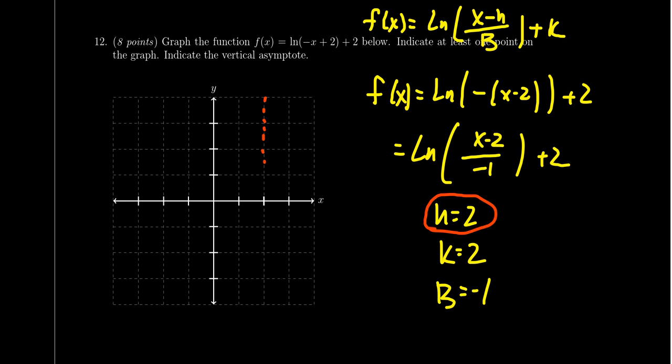So we're going to put that in there, we're going to label it x equals 2. Because we reflected across the vertical asymptote, the graph is actually going to be over here pointing something like that, as opposed to the standard logarithm, which points to the right. So that's an important observation there.